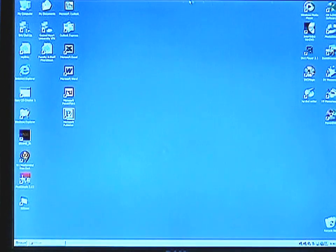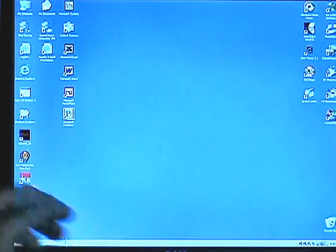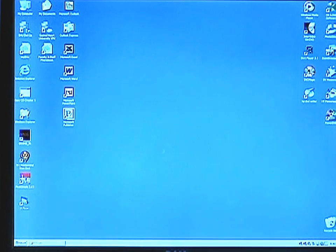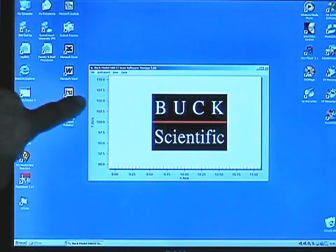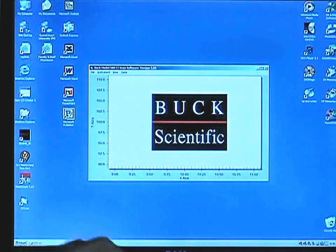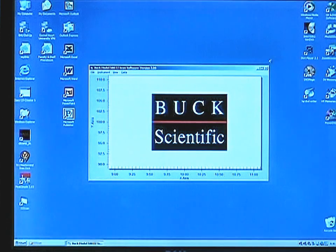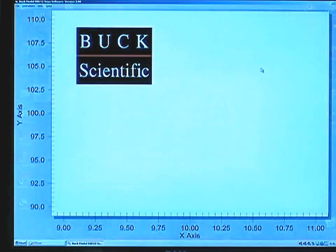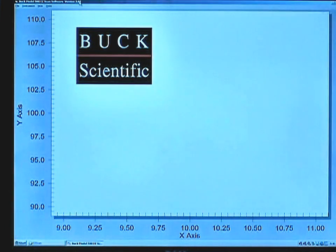Double-click on the Easy Scan icon, making sure the data cables are connected to the back of the PC and the instrument. And you'll get the Buck Scientific logo in the Easy Scan screen. You can maximize this as necessary.